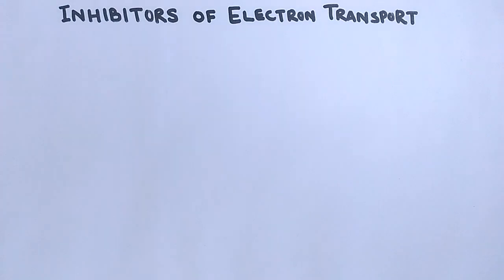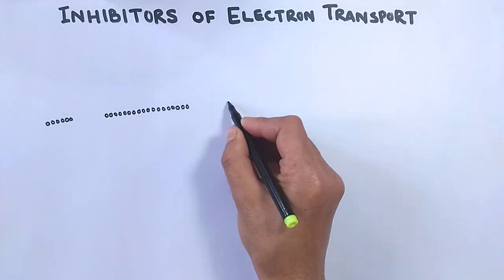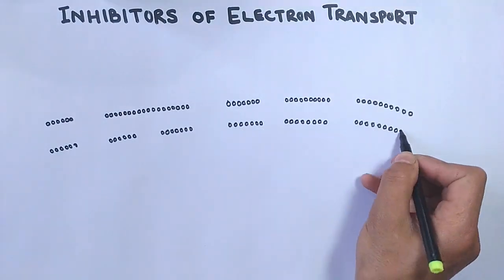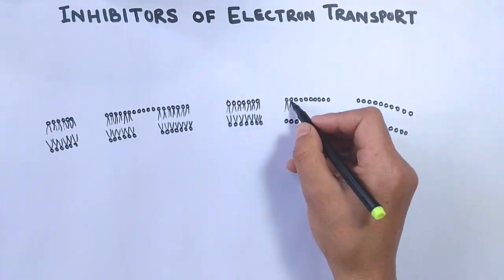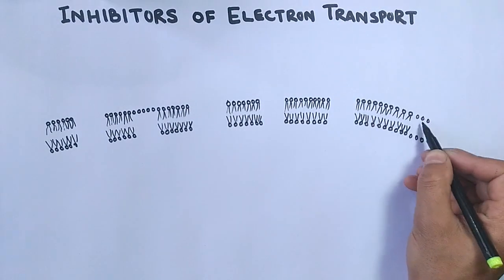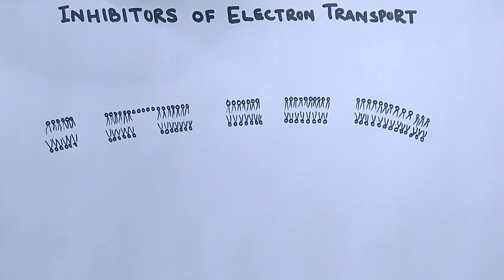We will be discussing about compounds that inhibit or halt the electron transport chain. The inhibition of electron transport chain has got some great importance in pharmacology, agriculture, and other fields. Before we discuss the inhibitors, we should know the basics of electron transport chain, then we will easily understand how these inhibitors act on the complexes.